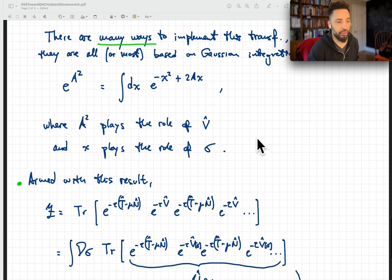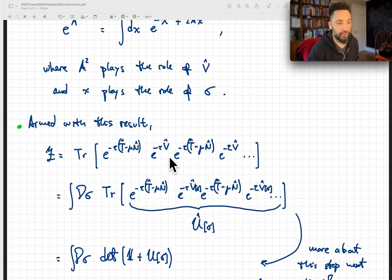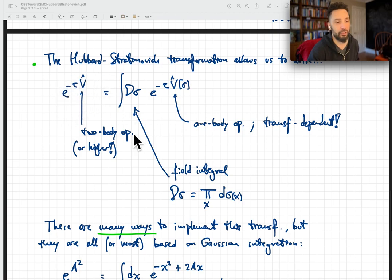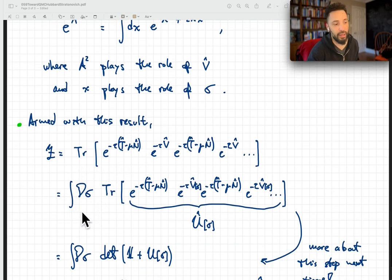Armed with this result, if we have the partition function written in this form after having done the Trotter-Suzuki factorization, then for each of these interaction factors, that could be two-body operators or more, you insert our transformation. You do that, you insert that, you pull out all the integrals, and we collect them all here into one big integral over this sigma, over this field. Now, at each point, we are left with a sigma-dependent one-body operator.